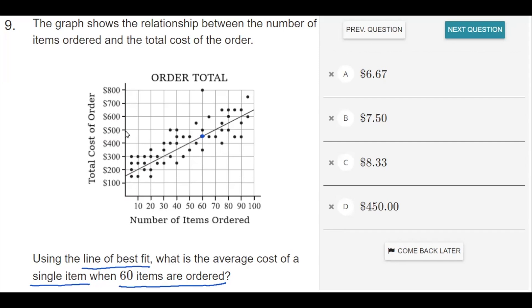So that would be about $450 would be the cost of ordering 60 items. But notice over here, this is the total cost of the order, and the question is asking us for the cost of a single item.